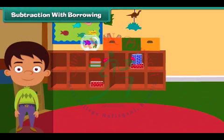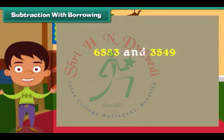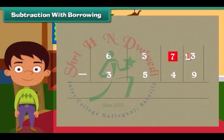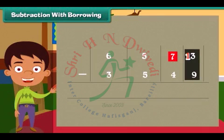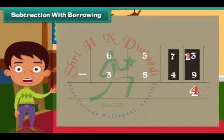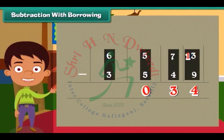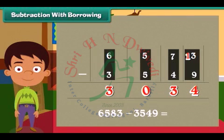Subtraction with borrowing. It's time to learn subtraction involving borrowing. Subtract 3549 from 6583. We again start from the ones column. Since 3 is smaller than 9, we will borrow 1 ten from 8. Therefore, 3 will become 13 and 8 will become 7. Subtract 9 from 13 — we get 4. Subtract tens: 7 minus 4 is 3. Similarly, subtract hundreds: 5 minus 5 is 0. Subtract thousands: 6 minus 3 is equal to 3. So 6583 minus 3549 is equal to 3034.